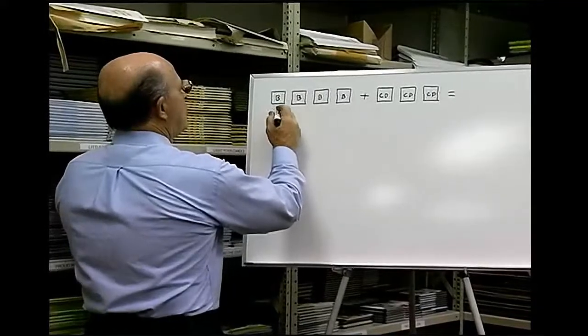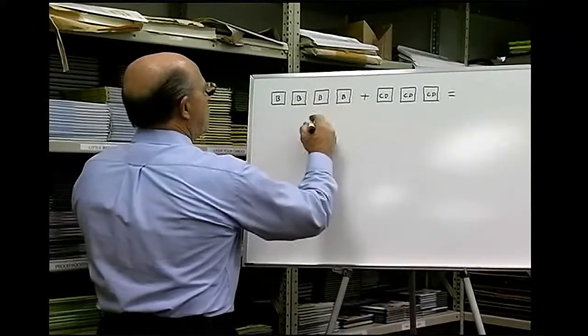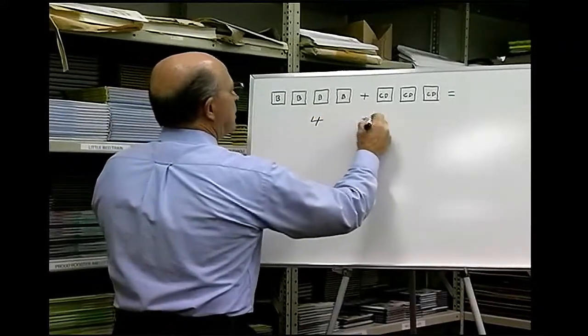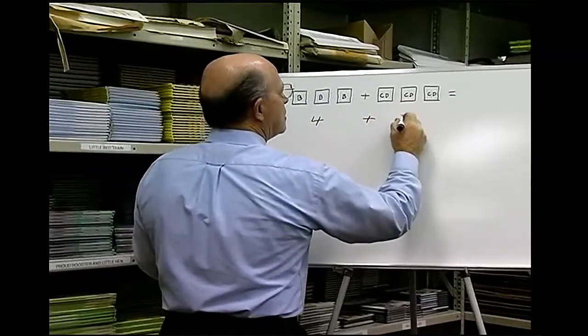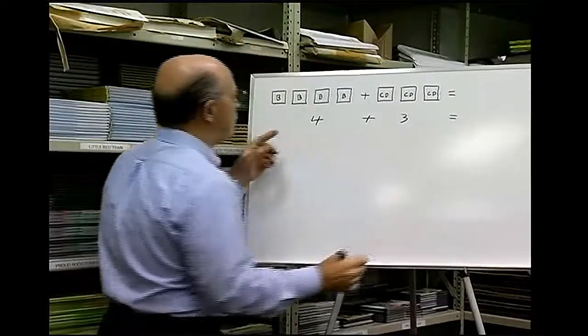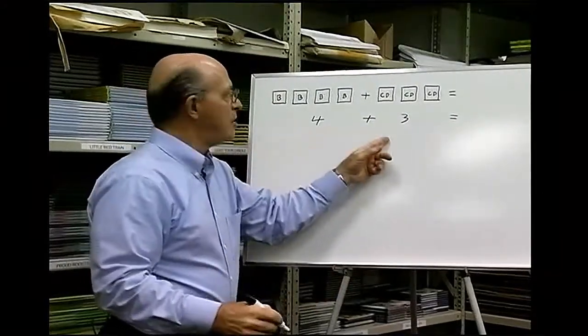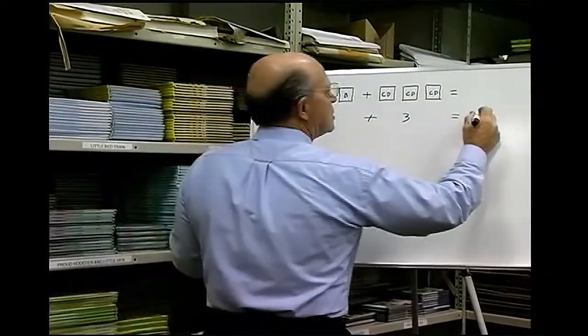So we get an order of four books, one, two, three, four, plus three CDs, one, two, three. Four plus three equals seven.